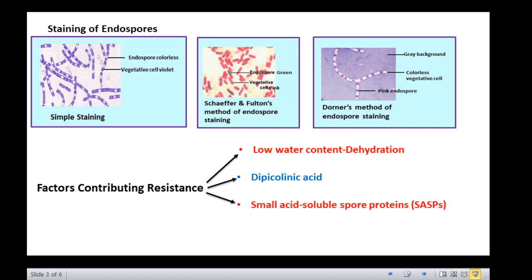Another component of endospores that contributes to their resistance to chemical agents is the strong spore coat, which is composed of highly cross-linked keratin. Thus, we can say that the resistance of endospores is multifactorial.